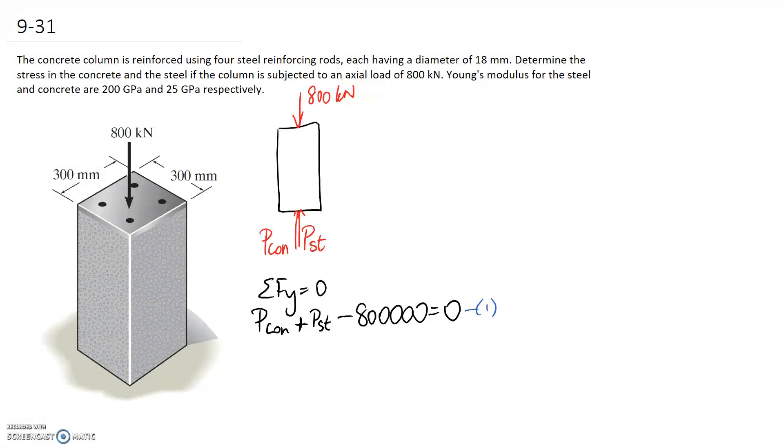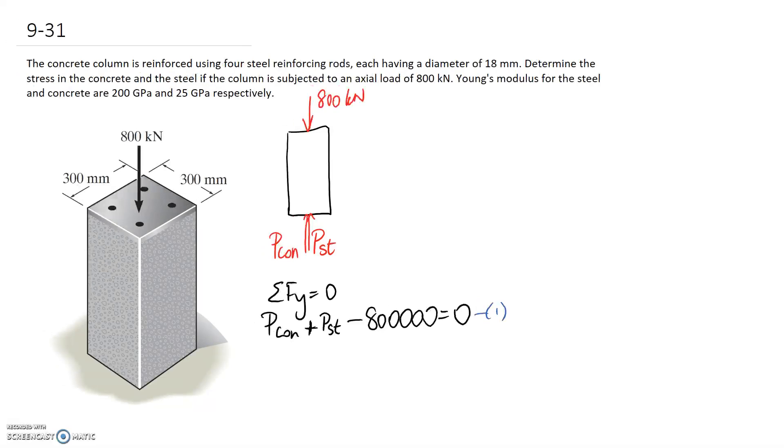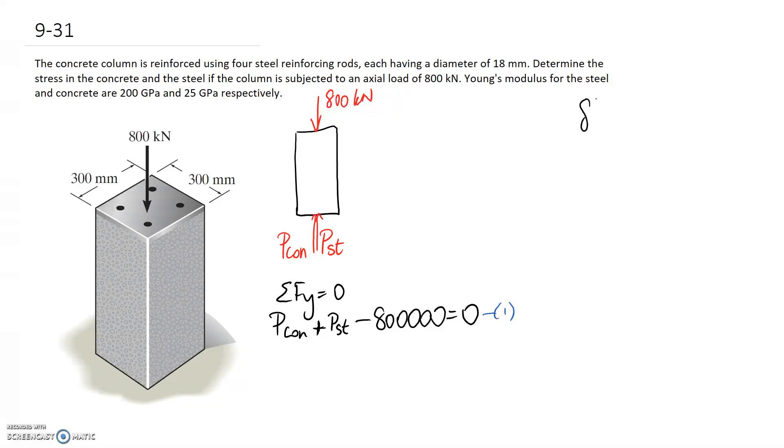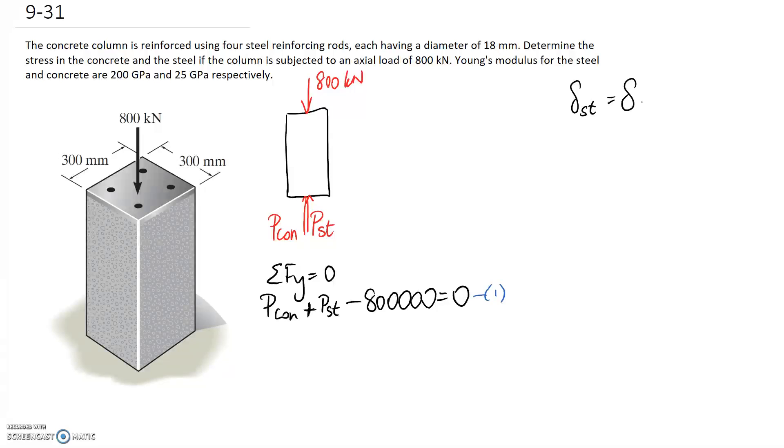So this is where our compatibility conditions come into play, and these are about relating together the deformation of individual components in your system. What I'm going to assume is that when I force this 800 kN downwards, it's going to compress both the concrete and the steel. If that's the case, and they're stuck together really well, if one of them changes in the length, the other one should change an equal amount in its length as well. So the compatibility condition is that the displacement, axial deformation, through the steel must be equal to the deformation experienced through the concrete.